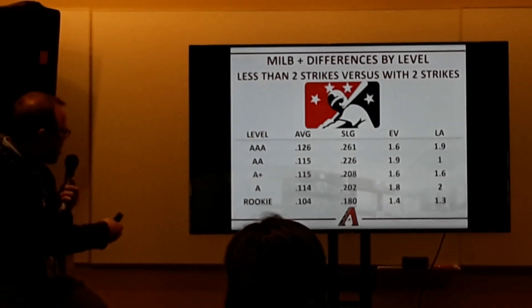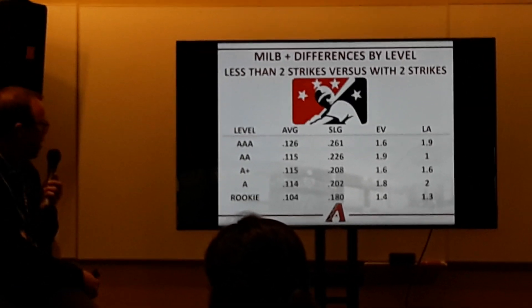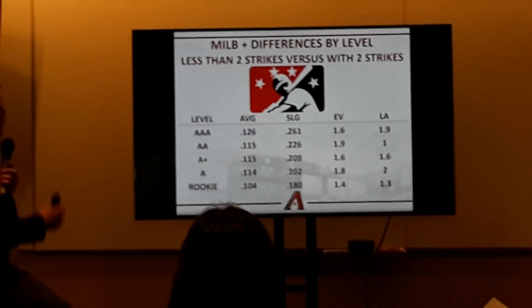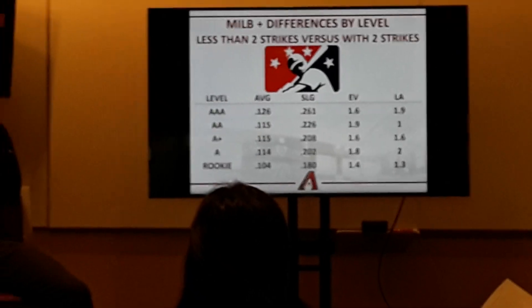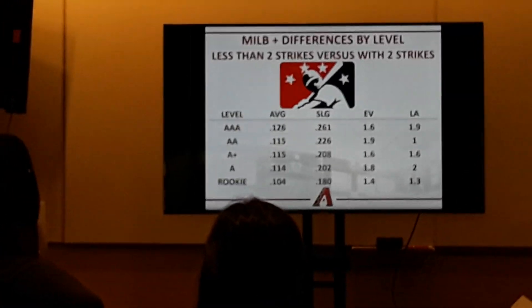AAA — you can see it all the way down to rookie ball. These are much more pronounced differences. Do you want to talk about the difference from a rookie ball player to a AAA player, in A-ball short season versus advanced?